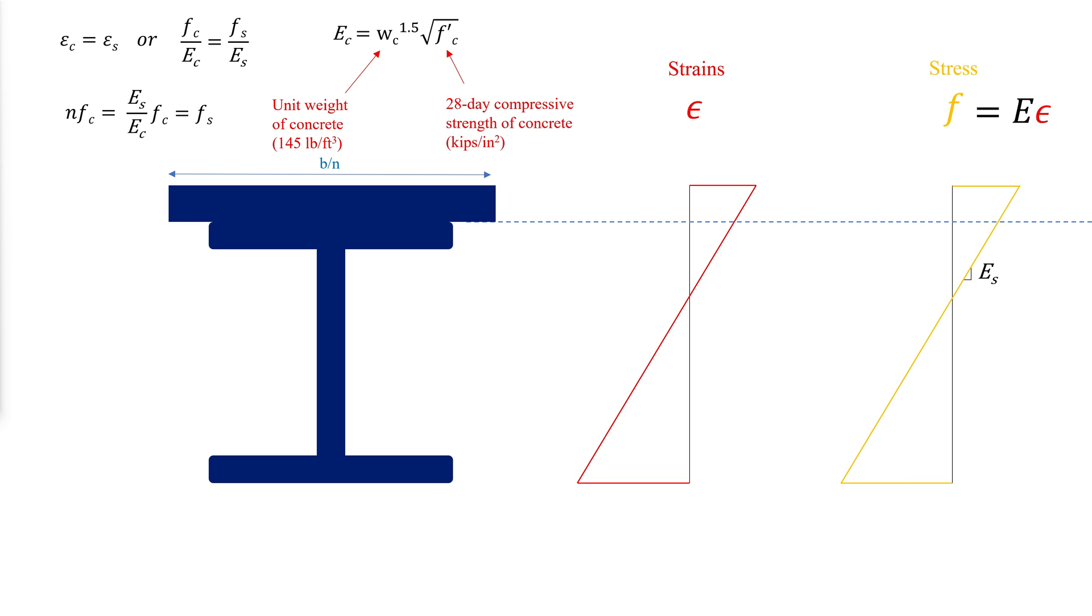Doing so results in the homogeneous steel section shown. To compute stresses, we locate the neutral axis of this composite shape and compute the corresponding moment of inertia.